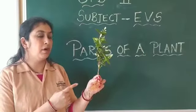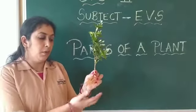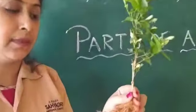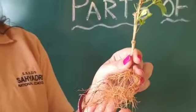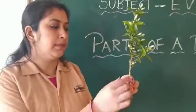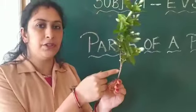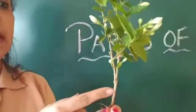We are going to learn about parts of a plant. What is this children? Yes, it is a root. Can you see this part children? It is a stem.